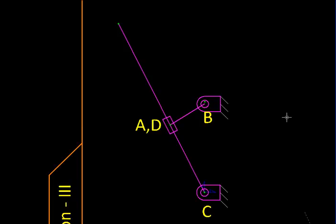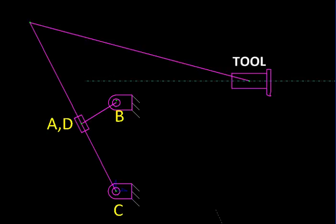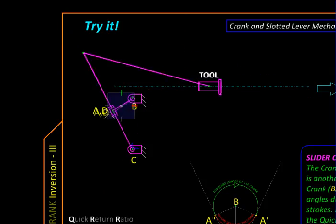Next we are going to make this mechanism a little more useful by adding a few links like this. Here we have added a link, at the end of it we have fixed a tool which is constrained to reciprocate along this horizontal path. Now as the mechanism moves, the tool goes back and forth, so it reciprocates.